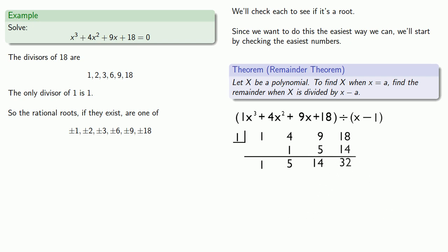So remember, this tells us that our dividend can be written as x minus 1 times a polynomial plus a remainder. But that means that x minus 1 is not a root. Because if x equals 1, the polynomial will evaluate to the remainder 32.